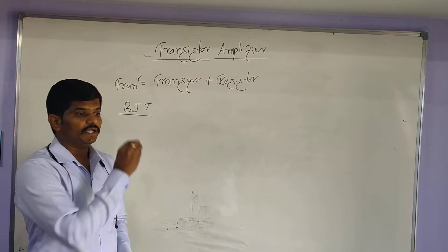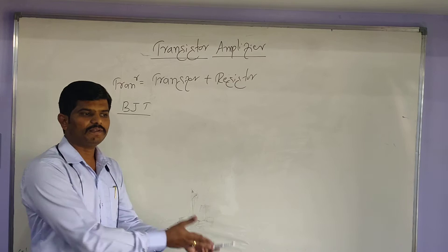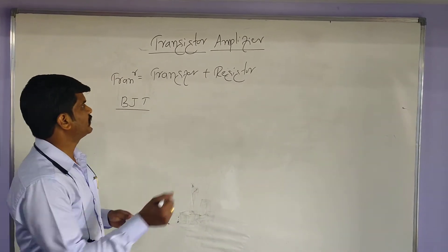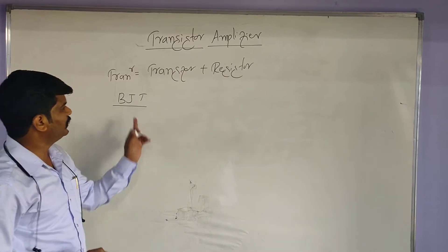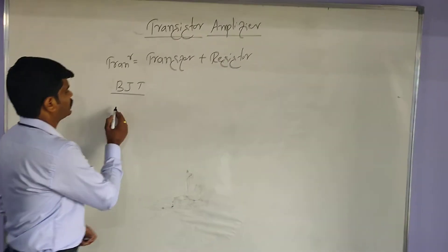Meanwhile, we can say the current conduction is due to both minority as well as majority, known as BJT. And the transistor often referred as BJT. Coming to the concept of amplifiers now.